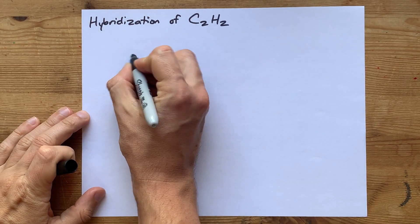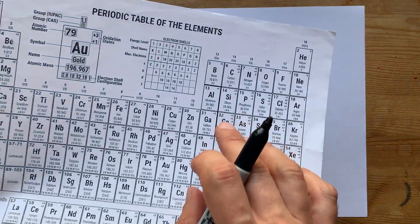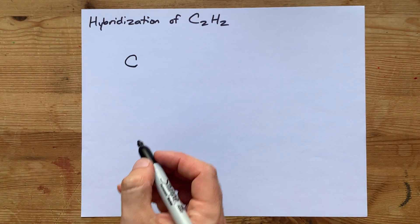You'll need to draw the Lewis structure first. To figure out the Lewis structure, you'll need to know that carbon in group 14 brings four valence electrons with it.